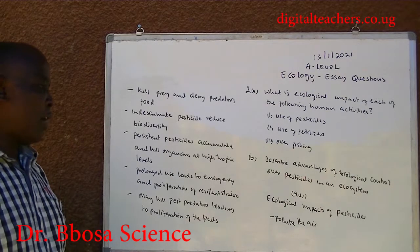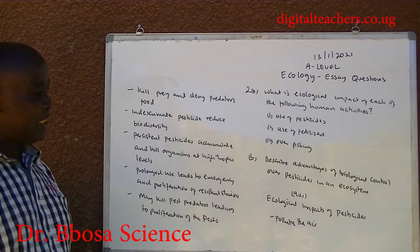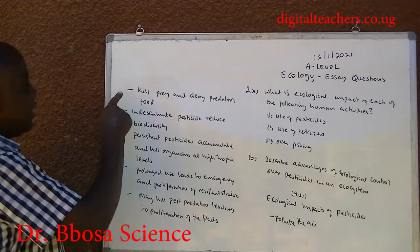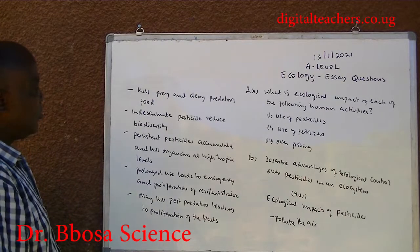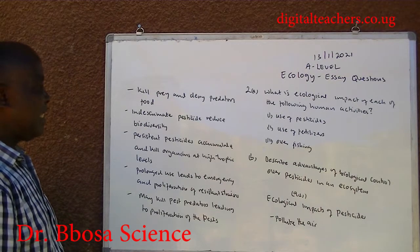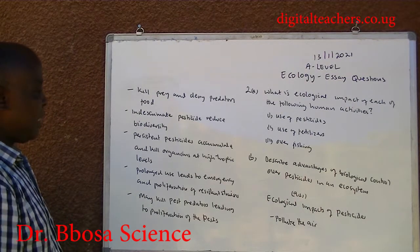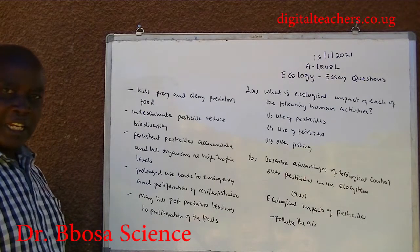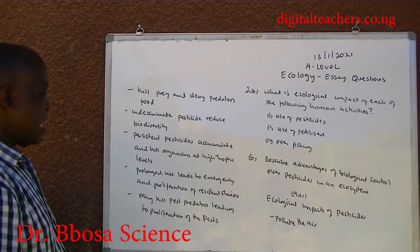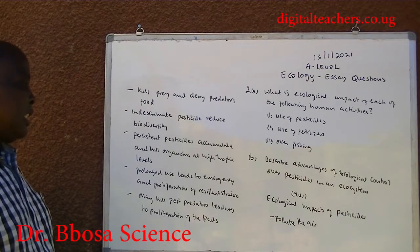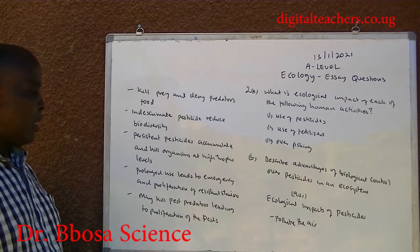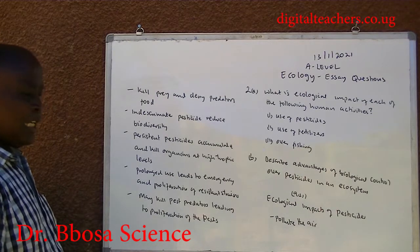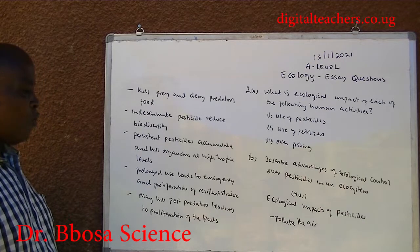A. Roman 1. Ecological impacts of pesticides include: pollute the air, kill the prey and deny predators food. Indiscriminate pesticides reduce biodiversity. Persistent pesticides accumulate and kill organisms at high trophic levels. Prolonged use reduces emergence and leads to proliferation of resistant strains. May kill pest predators, leading to proliferation of pests.